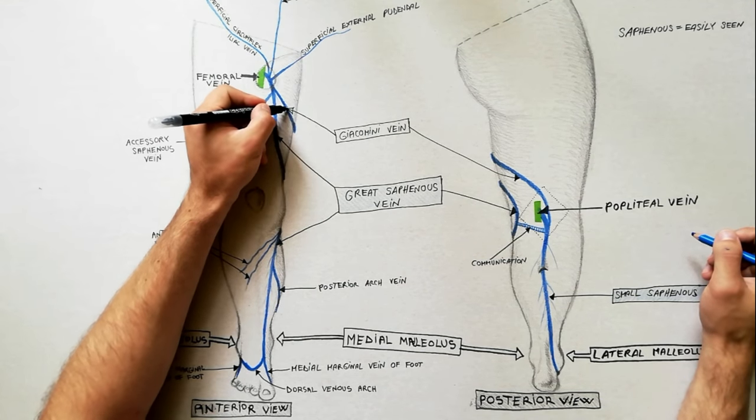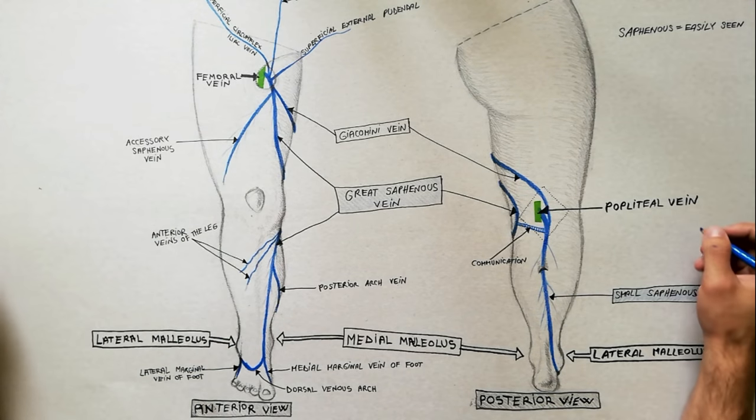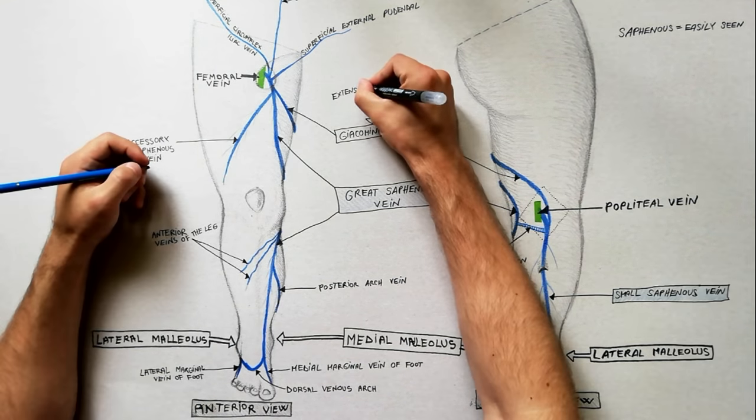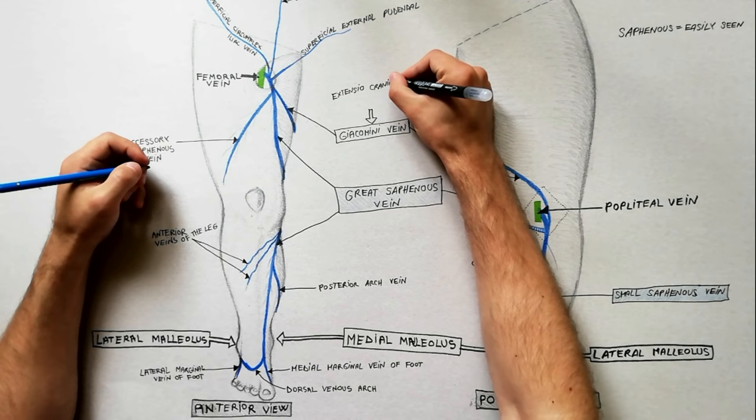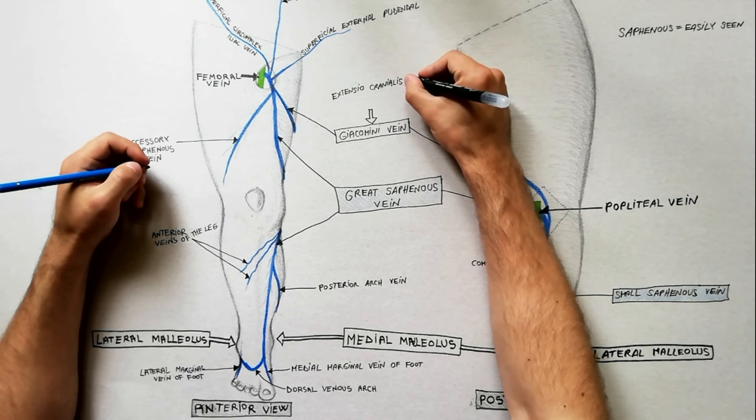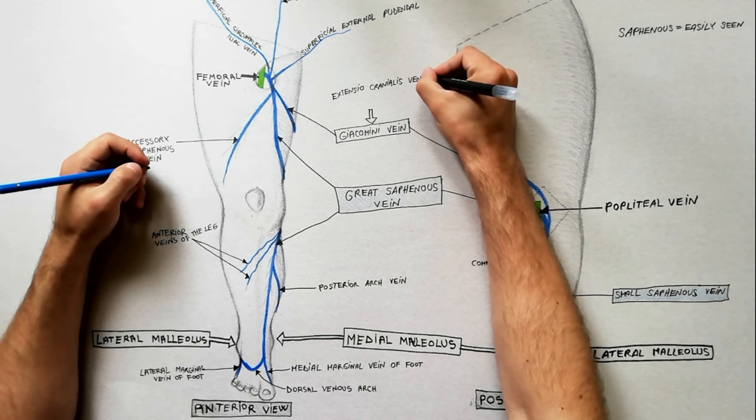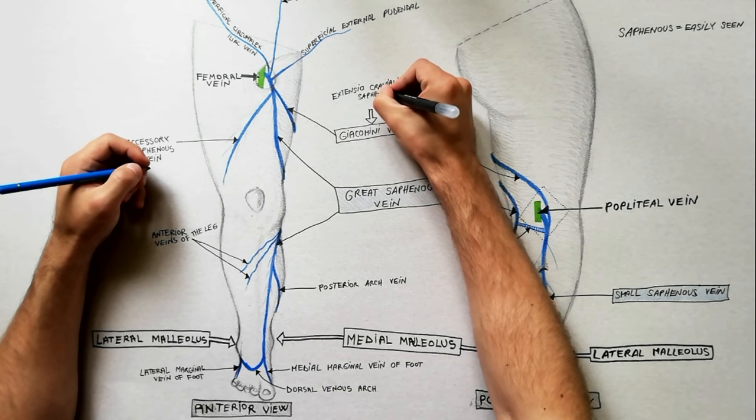According to Terminologia Anatomica, the Giacomini vein is called Extensio cranialis veni sapheni parvi, which in English means the cranial extension of the small saphenous vein.